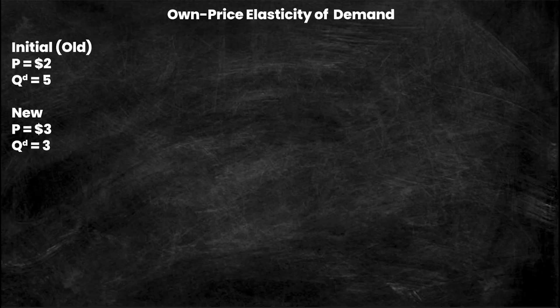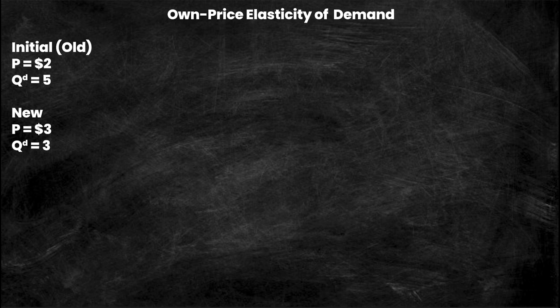In any question that asks you to calculate own-price elasticity, you're going to be presented with two different prices and two different quantities demanded, and there's going to be a shift from one of those points to another. Here I've made it crystal clear on the side - we have our initial or old P and QD, and then we've got our new price and our new quantity demanded. We want to see how elastic this consumer is as we go from the old price to the new price.